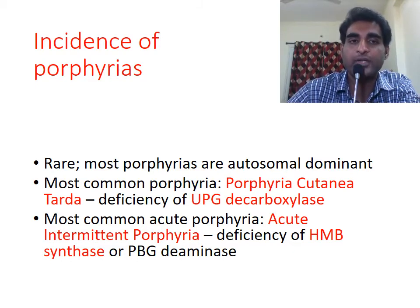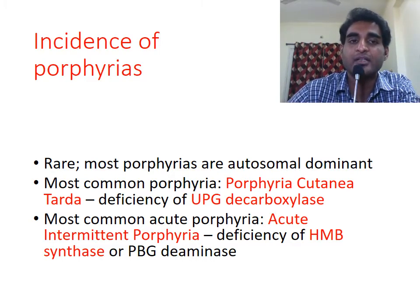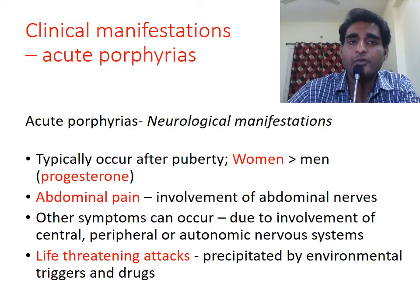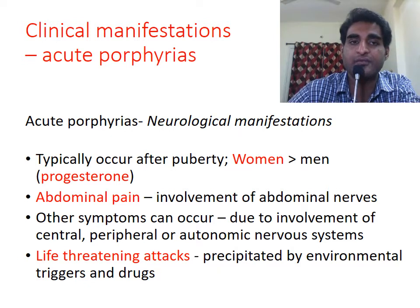Porphyrias are rare disorders and most of them have an autosomal dominant inheritance. The most common porphyria, porphyria cutanea tarda, is caused by deficiency of UPG decarboxylase. The most common acute porphyria is acute intermittent porphyria, due to deficiency of HMB synthase.